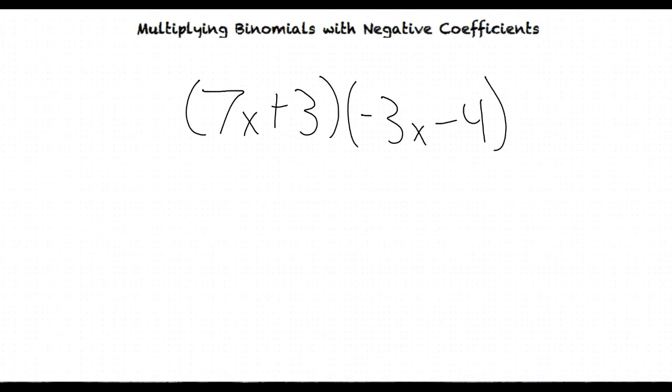Multiplying binomials with negative coefficients uses the same FOIL system that we would regularly use when multiplying binomials. The only difference is that we'll be using negative numbers. Multiplying negative coefficients is the same as multiplying negative numbers.